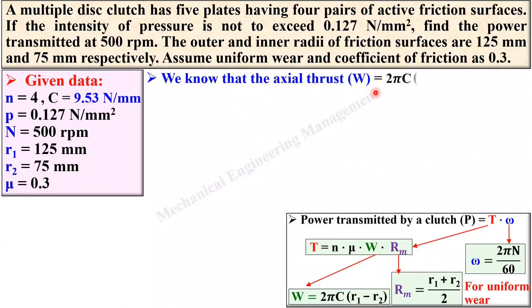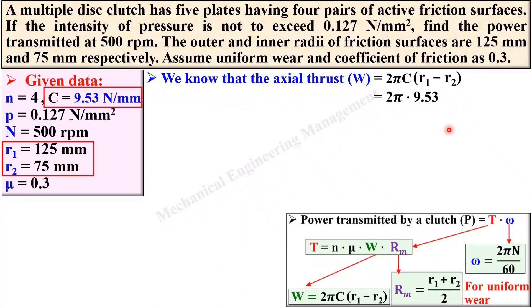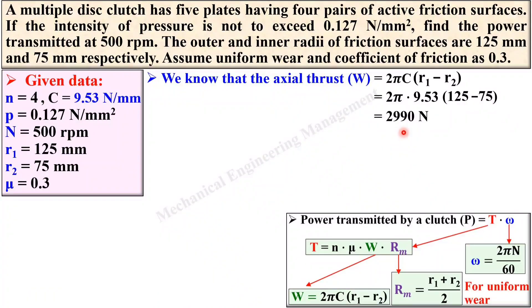The axial thrust W = 2πC(r1 − r2). Put the value of C, and r1 and r2 which are also given. Simplify it so that you will get W. This is the axial thrust, so it must be in Newtons.